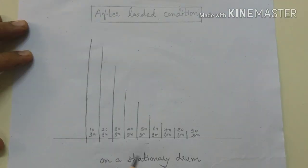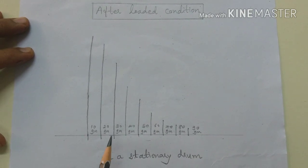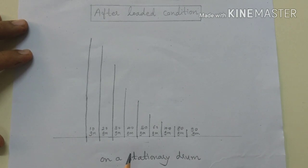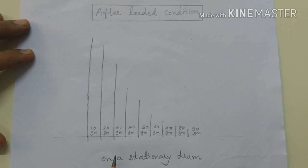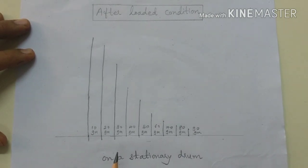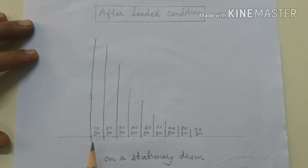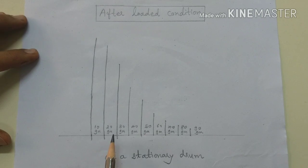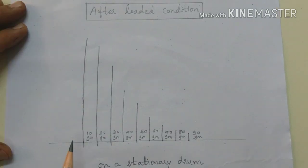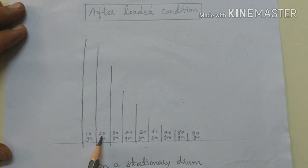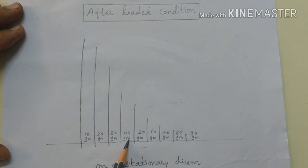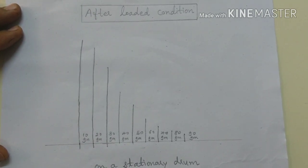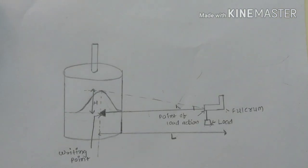This graph shows the effect of after-loaded condition recorded on a stationary drum. The arrangement is the same as in simple muscle twitch, but the drum is kept in a stationary position. Add 10 grams of weight each time and record the simple muscle curve on the stationary drum. This is the free-loaded condition.